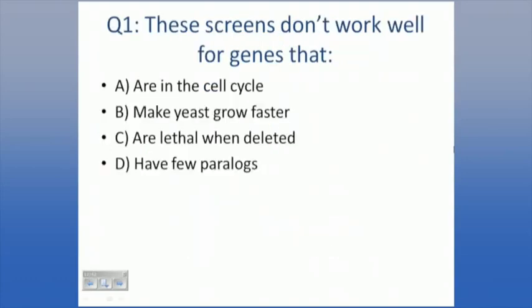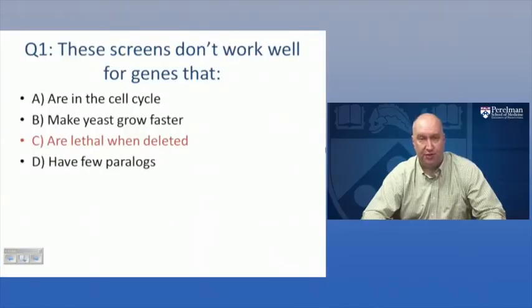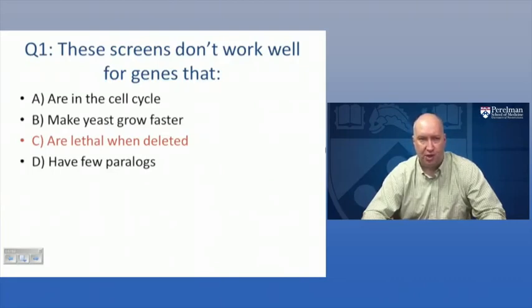Question one: these screens don't work well for genes that - A, are in the cell cycle; B, make yeast grow faster; C, are lethal when deleted; or D, have few paralogs. The answer is C, are lethal when deleted. They might not work well for a cell cycle gene if it was lethal when deleted. They work just as well for yeast that grow faster when genes are deleted. You simply can't test the biology of a gene if you can't grow the strain up because the deletion is lethal.